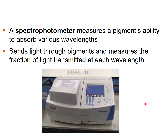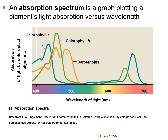Wavelengths and what can be absorbed or transmitted are measured by a spectrophotometer, which measures a pigment's ability to absorb certain wavelengths. It sends light through the pigments and measures what's transmitted at each wavelength, allowing you to determine what a particular pigment absorbs and what it emits. The result is shown as a curve — an absorption spectrum — plotting percent transmittance or absorbance against wavelength.